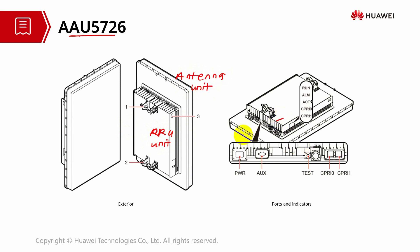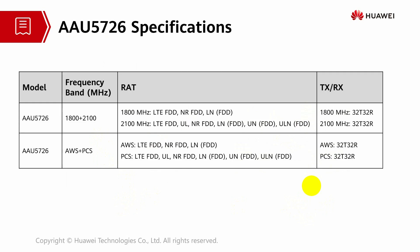The RRU and antenna unit are integrated together. This model's exterior design includes various ports and indicators. This AAU system supports two types of bands and can support mainly LTE network and also 5G network. It can support more TRX, and is part of the massive MIMO solution, supporting up to 32 TX and 32 RX.